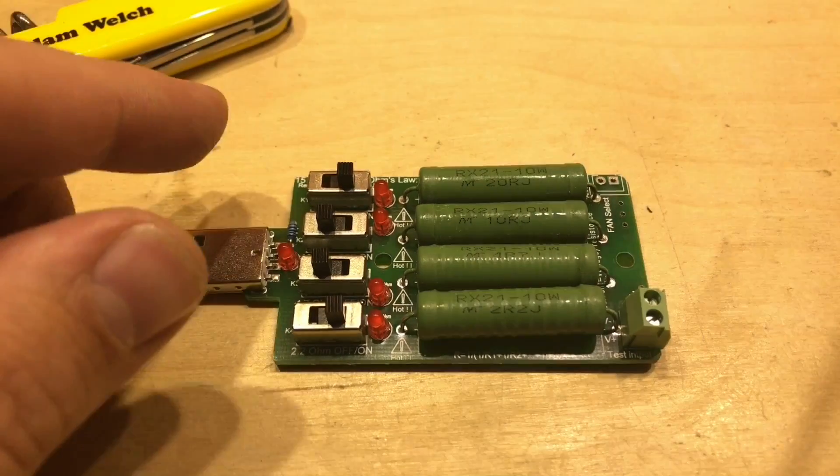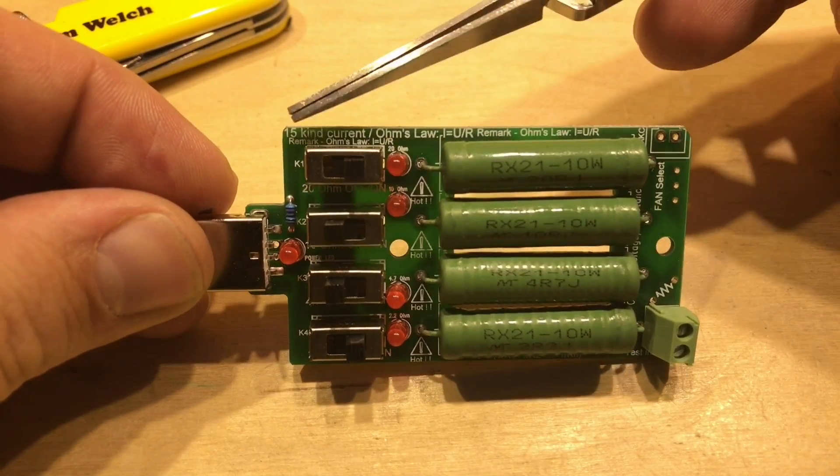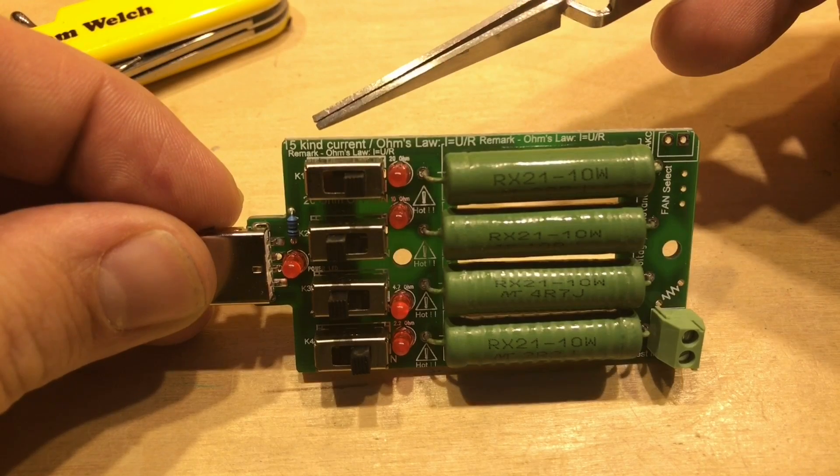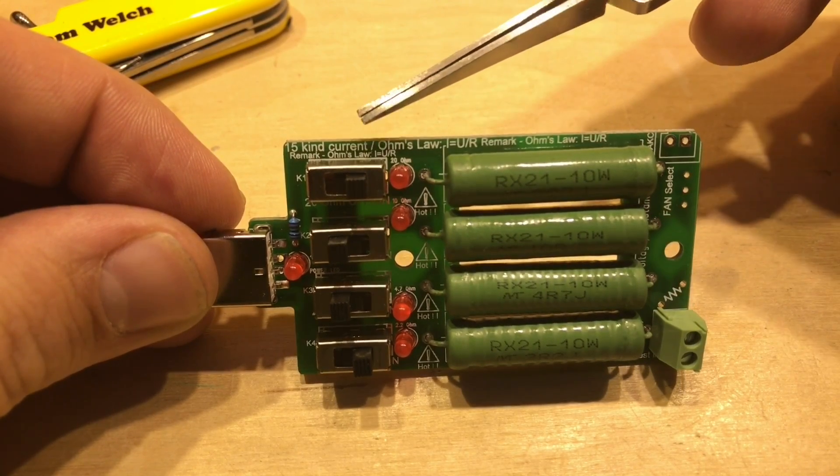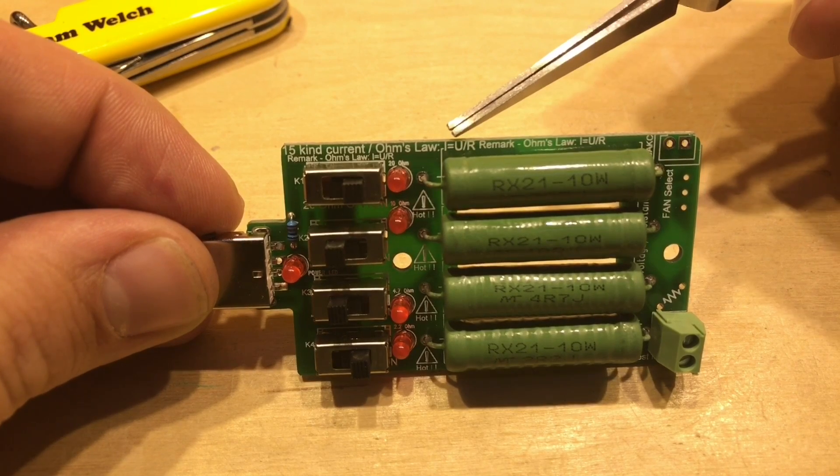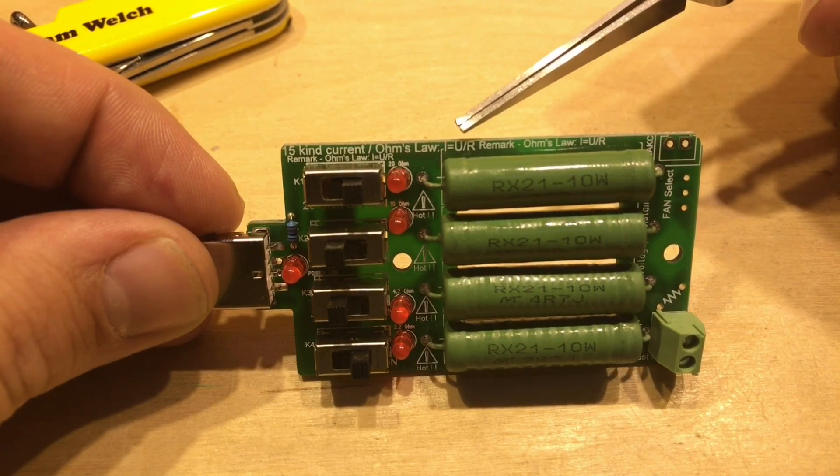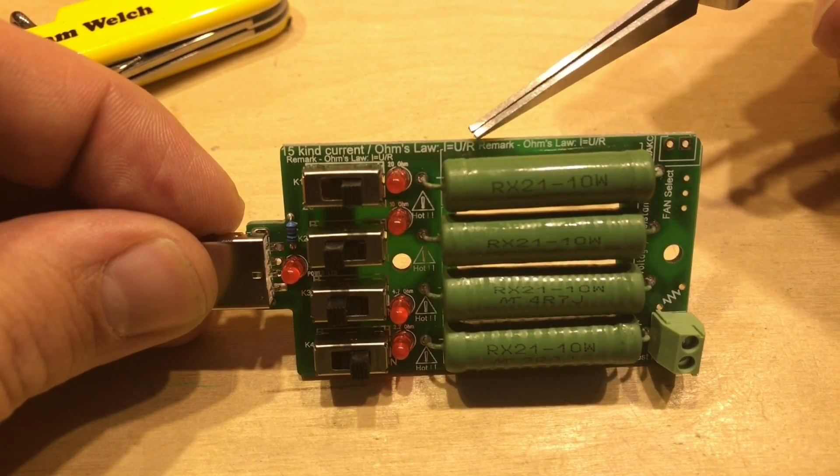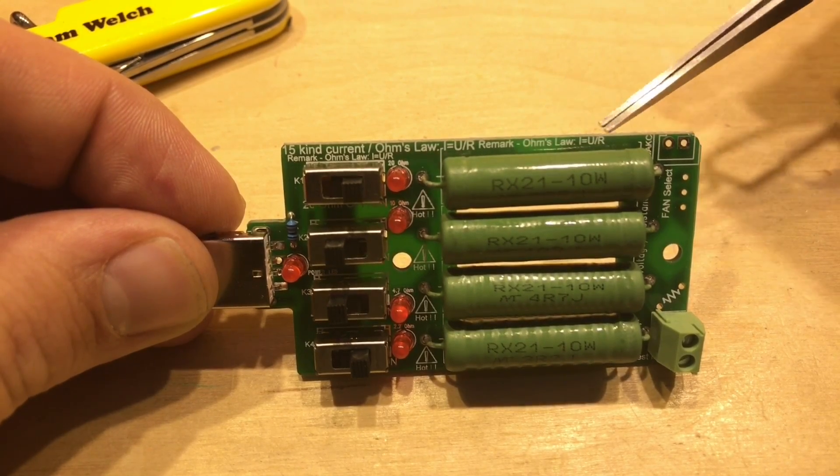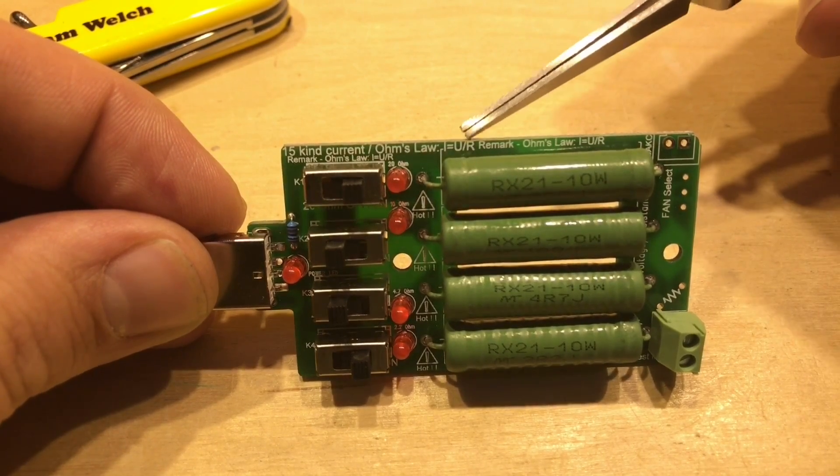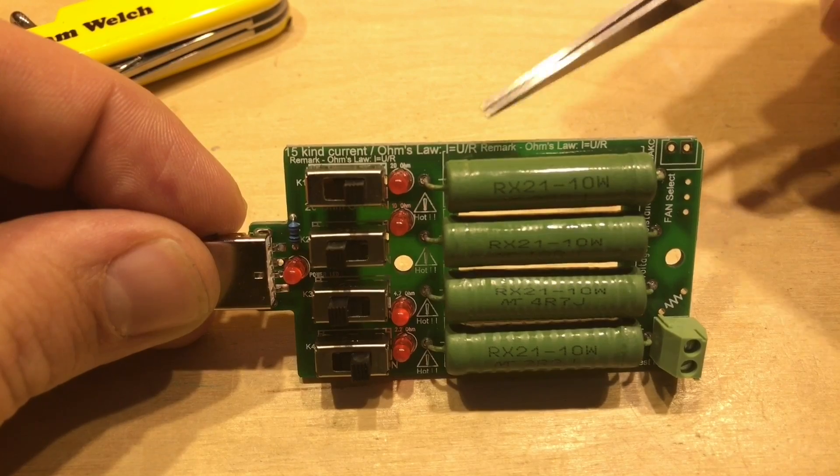But one of the things that drew me to this product was the fact that it mentions here 15 kind current - I presume that's 15 types or 15 kinds of currents. And it mentions Ohm's law here: I current equals U, I would say V over R, voltage over resistance. And then it mentions it again and finally a third time in the silk screen as well. So they obviously really want you to understand Ohm's law.